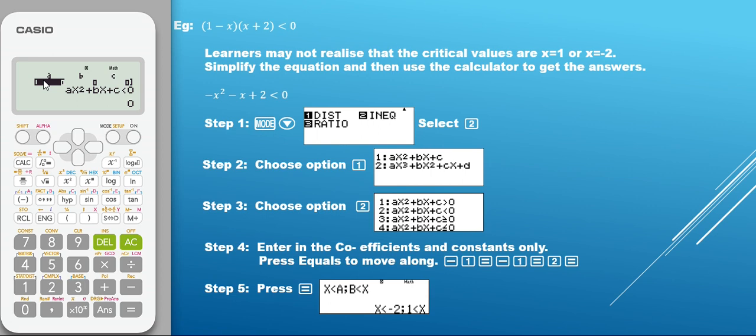What I mean by standard format is that your A value is always going to be your x squared, your B value is always going to be your variable, and your C value is always going to be your constant.